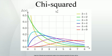History and name. This distribution was first described by the German statistician Friedrich Robert Helmert in papers of 1875–1876, where he computed the sampling distribution of the sample variance of a normal population. Thus in German this was traditionally known as the Helmertsche or Helmert distribution. The distribution was independently rediscovered by the English mathematician Karl Pearson in the context of goodness of fit, for which he developed Pearson's chi-squared test, published in Pearson 1900.